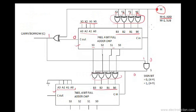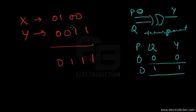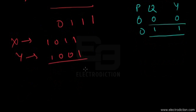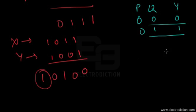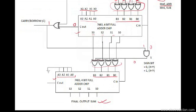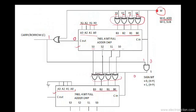Even if there is a carry in certain addition cases — say X is a larger number and Y another — it would produce a carry here. But with M set to 0, the second set of XOR gates still remains transparent, and the sum is passed onto the final output unhindered. That covers the addition process.